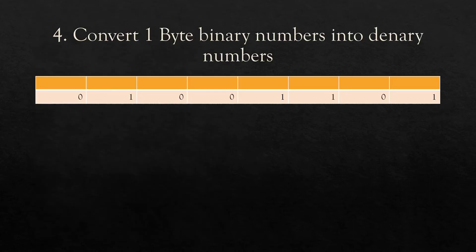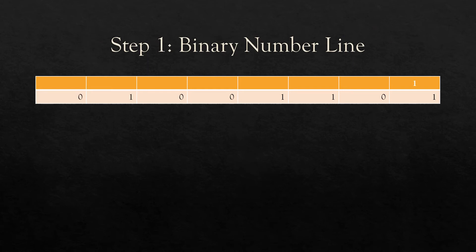For IGCSE Computer Science, you need to know how to convert 1 byte of a binary number into a denary number. Let's take this example: the number is 1 0 1 1 0 0 1 0, read from right to left. Step 1 is to write the binary number line from right to left: 1, 2, 4, 8, 16, 32, 64, and 128.